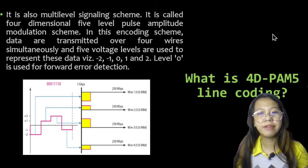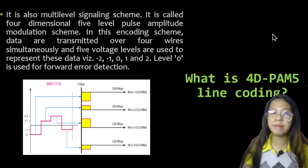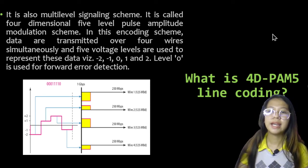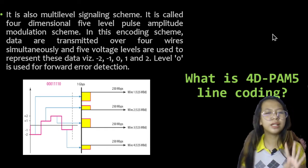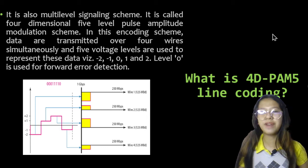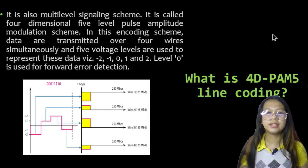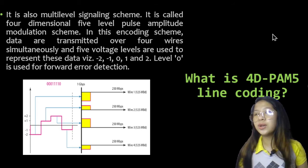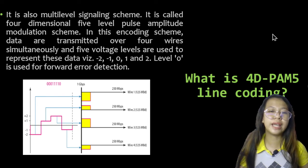It is a multi-level signal scheme called 4D 5-level Pulse Amplitude Modulation. In this encoding scheme, data are transmitted over 4 wires simultaneously, and 5 voltage levels are used to represent the data: negative 2, negative 1, 0, 1, and 2. Level 0 is used for forward error detection.